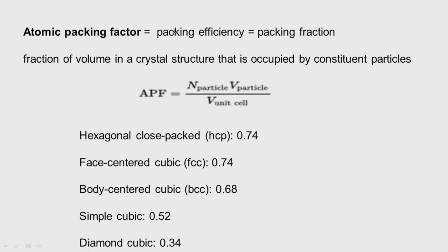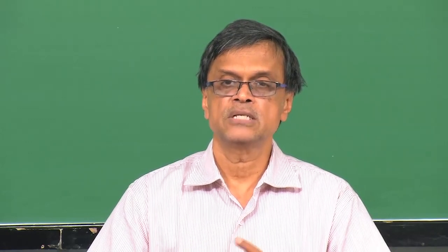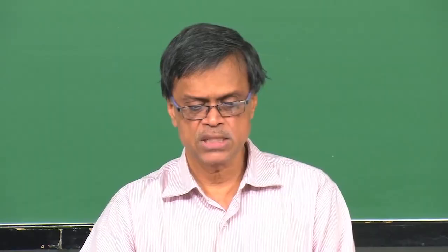There is something called atomic packing factor, also called packing efficiency or packing fraction — that means the fraction of the volume in a crystal occupied by atoms. One minus that fraction gives you the void space. If void space is minimum, it will be a very strong crystal; if maximum, it is like a porous structure and strength is much lower. The hexagonal close-packed packing fraction is 0.74, face-centered cubic is also 0.74, body-centered cubic is 0.68, simple cubic is 0.52, and diamond cubic is 0.34.